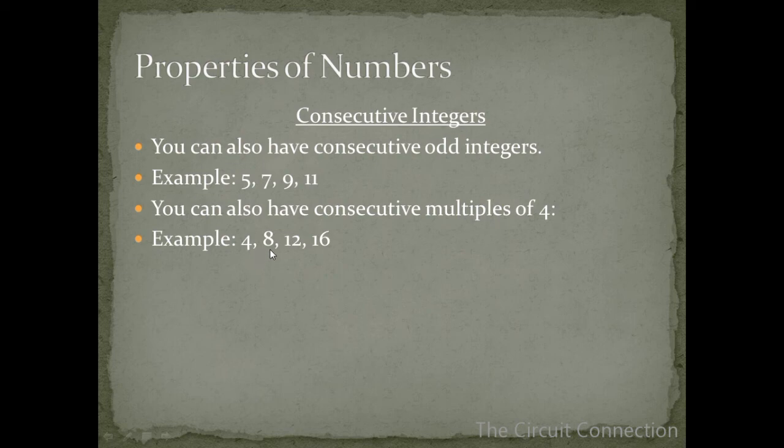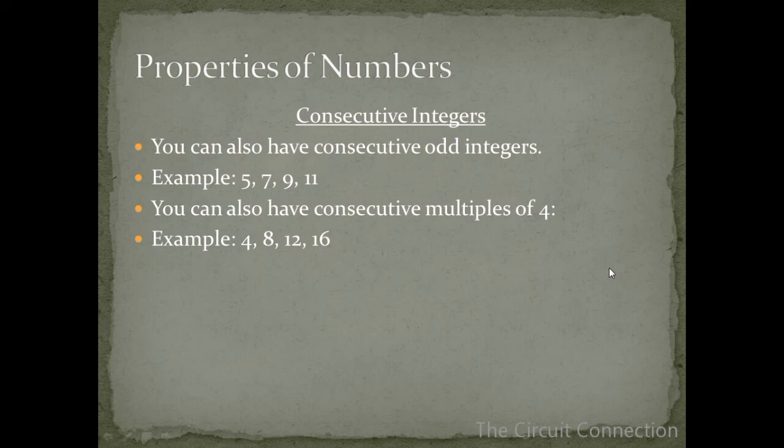Why? Because they're multiples of 4. 4 times 1 is 4, 4 times 2 is 8, 4 times 3 is 12, 4 times 4 is 16, and so on. However fractions and decimals cannot be consecutive, only integers can be consecutive. So formally speaking this is the definition of consecutive numbers.